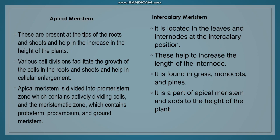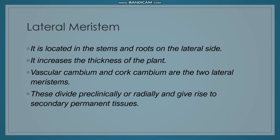Examples of intercalary meristem include grass and monocot plants. Intercalary meristem is considered a part of apical meristem. Apical meristem helps with height of the plant, while intercalary meristem helps with length of the internode or leaves. Lateral meristem is found in stems and roots and increases the thickness of the plant.